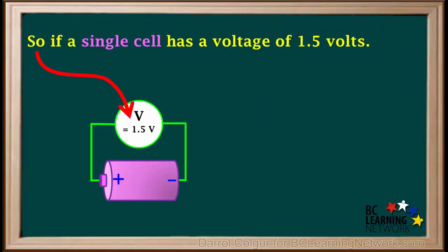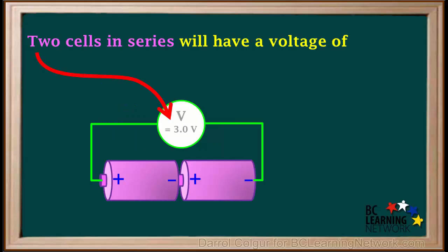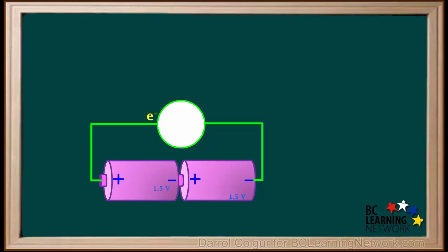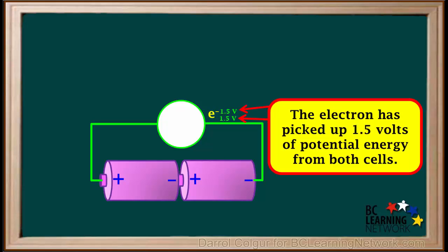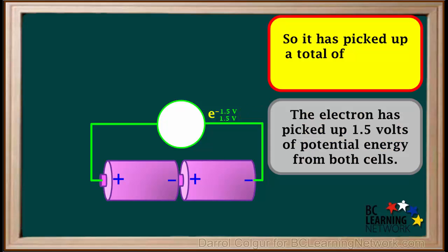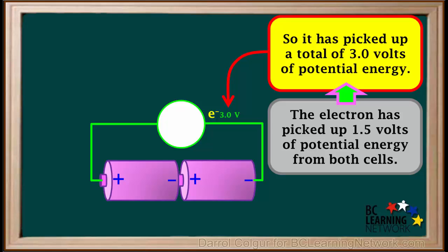If a single cell has a voltage of 1.5 volts, two cells in series will have a total voltage of 3 volts. To understand how this works, we imagine one electron going through one cell. As it goes through, it picks up 1.5 volts of potential energy and goes into the other cell, where the same electron picks up another 1.5 volts of potential energy. So this single electron has picked up 1.5 volts from both cells, for a total of 1.5 plus 1.5, which is 3 volts of potential energy.